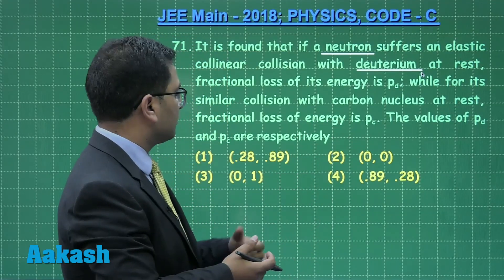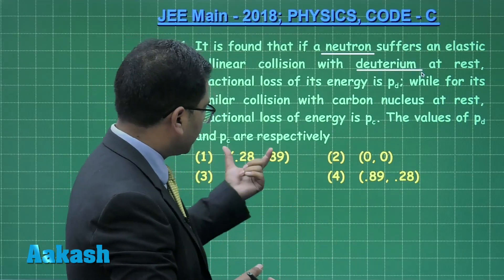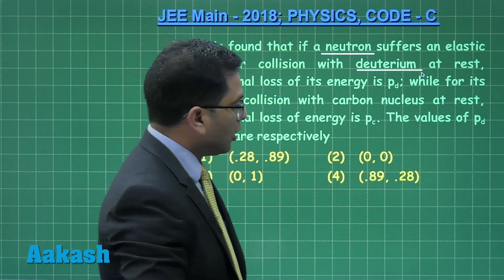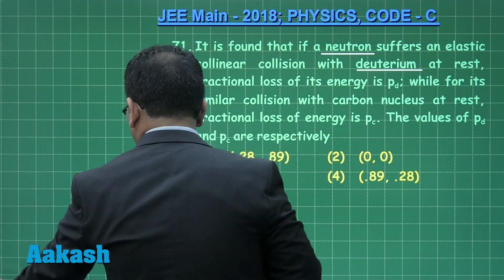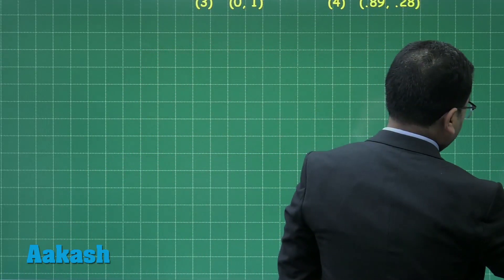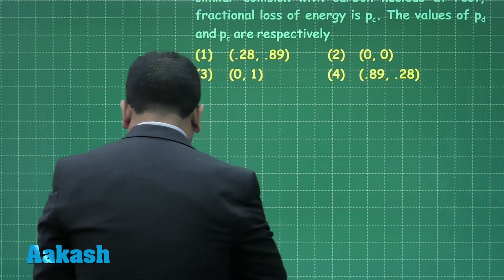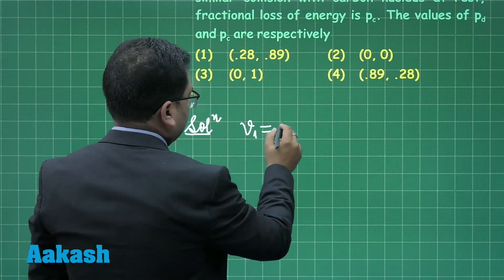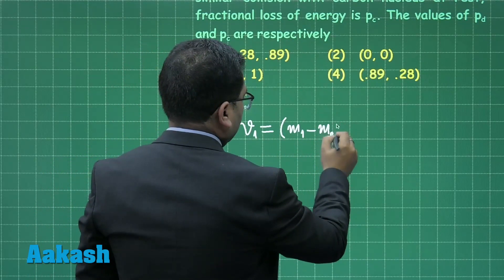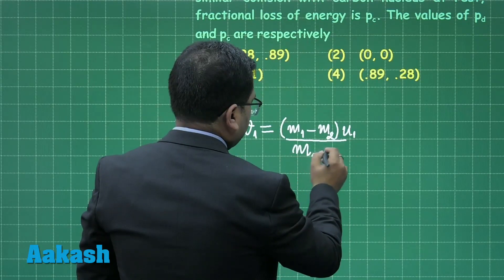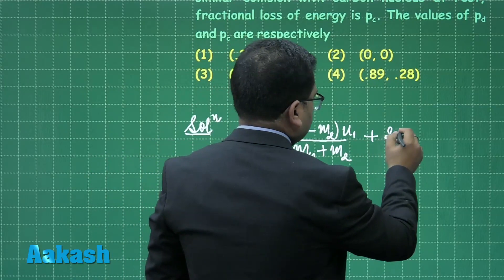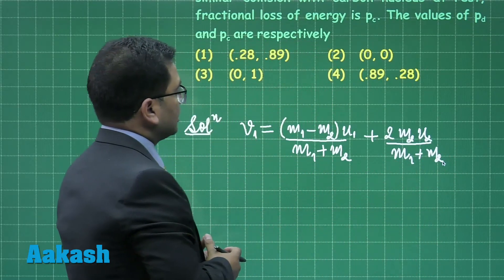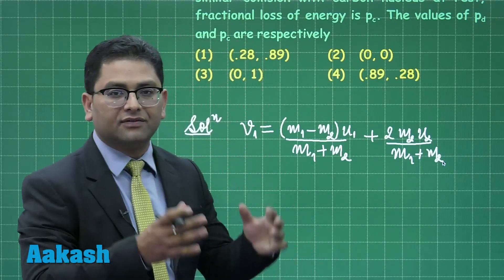We need to calculate the values of p_d and p_c from the given options. Recalling the elastic collision formula, the velocity of particle 1 after collision is: v1 = (m1 - m2)·u1 / (m1 + m2) + 2·m2·u2 / (m1 + m2). Since we need the fractional loss in kinetic energy of the neutron, only v1 is required.